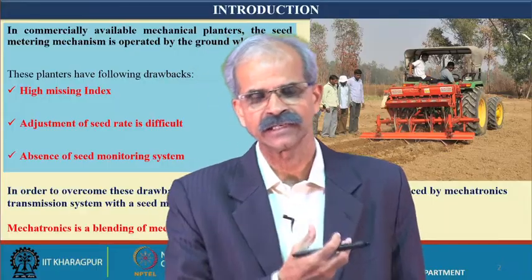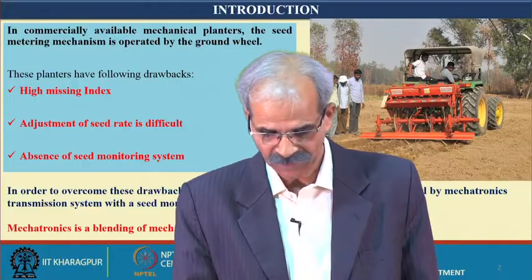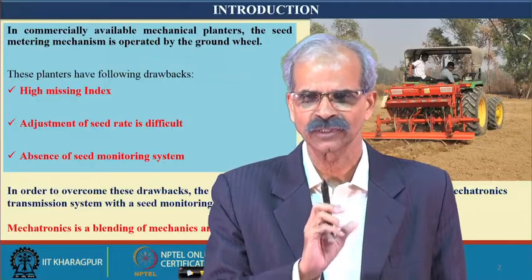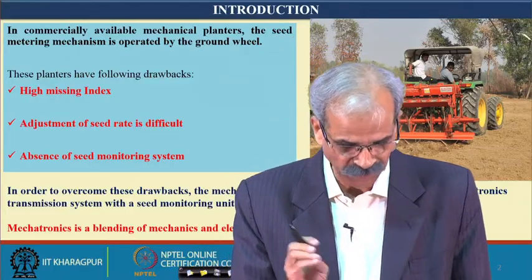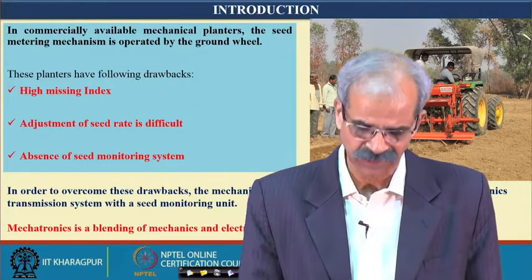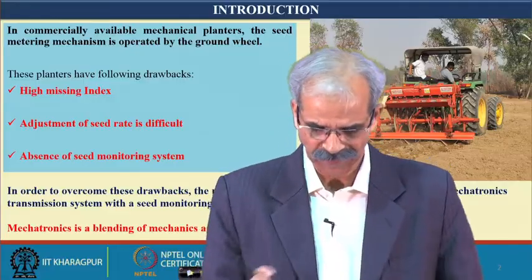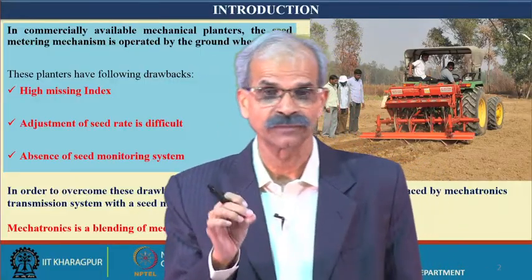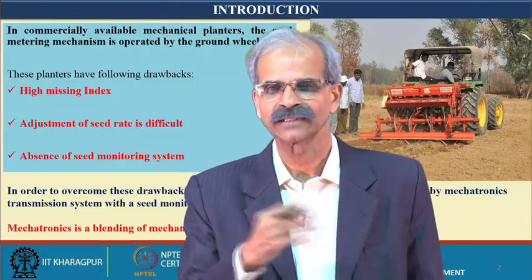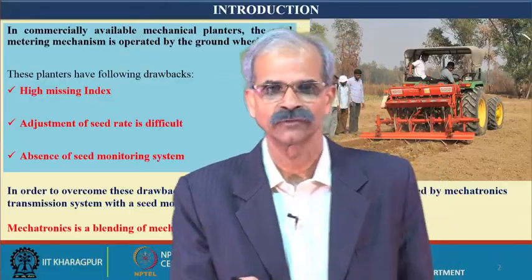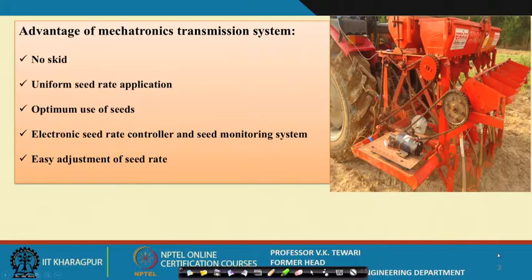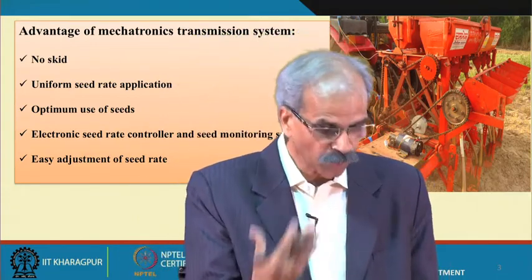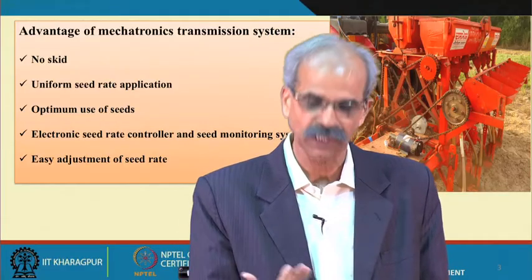To take care of this, we need a system where, from mechanical transmission, we move to mechatronics transmission — where we use the electronics part and a high level of mechanization for seed metering. Mechatronics is a blend of mechanical and electronics. The advantages of a mechatronic system directly address those drawbacks: if you overcome the difficulties, those become the advantages.